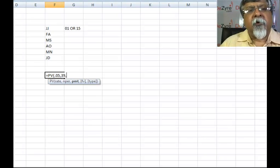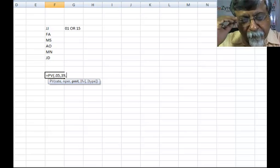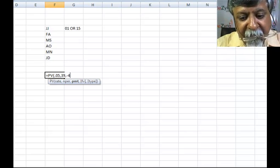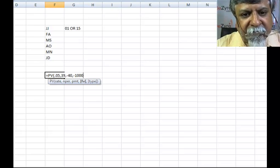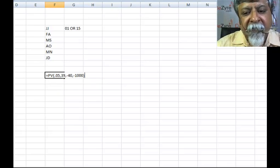So what do we do? We put minus 40 and we put the face value as minus 1000. Do not worry about type at this stage.